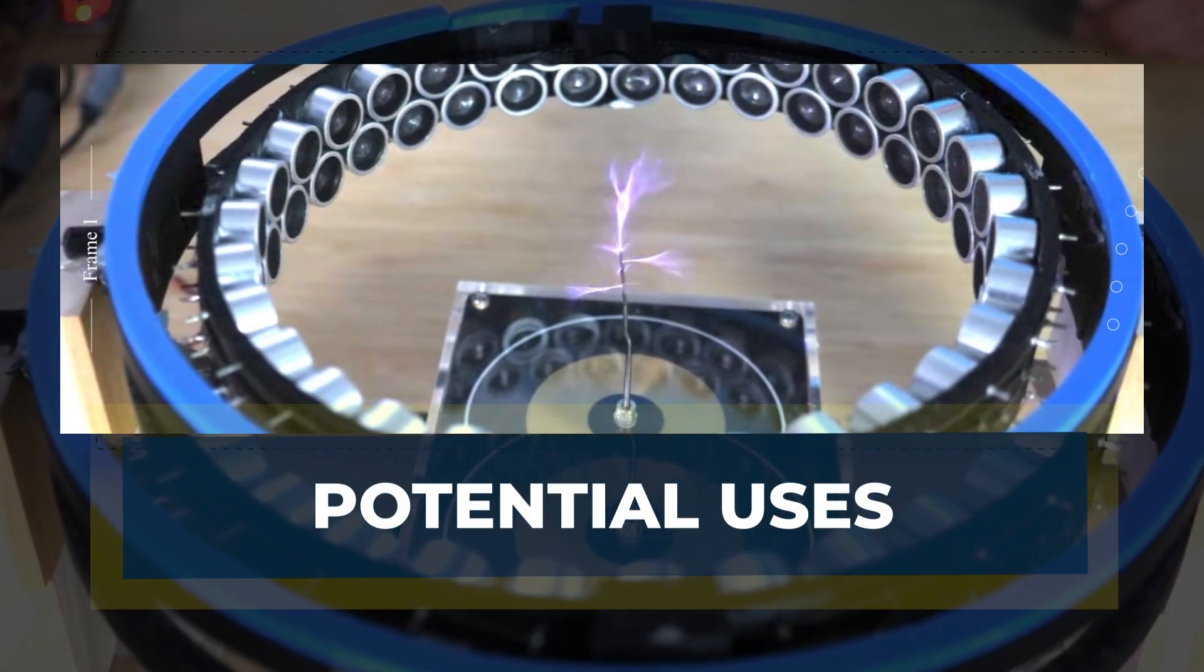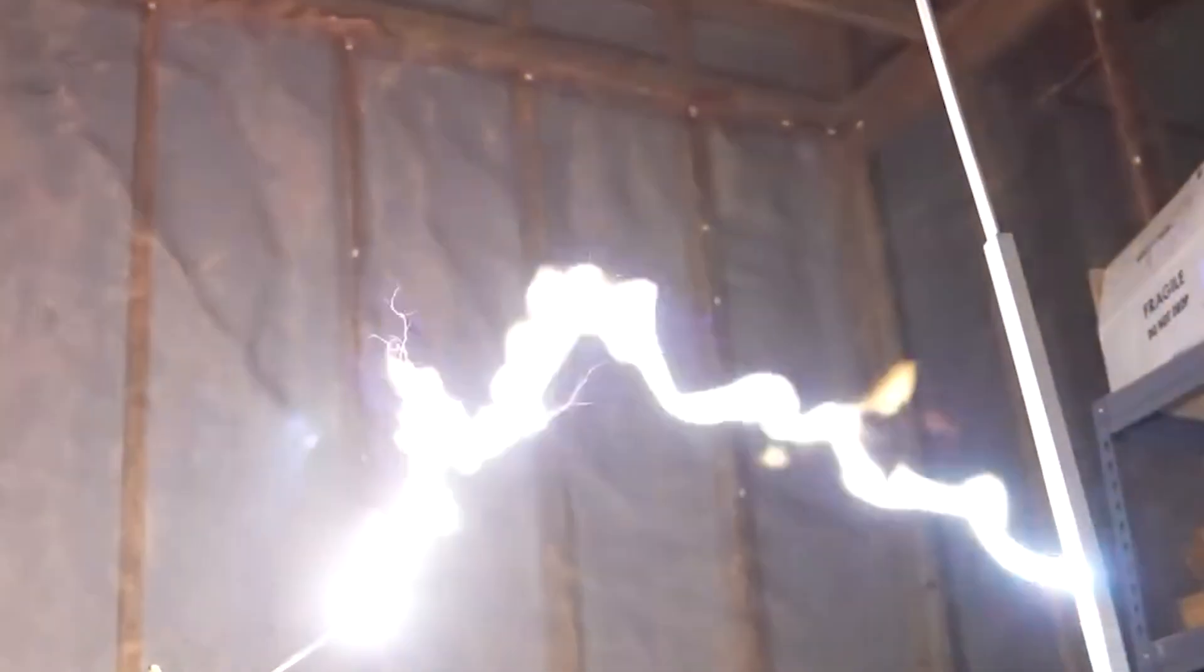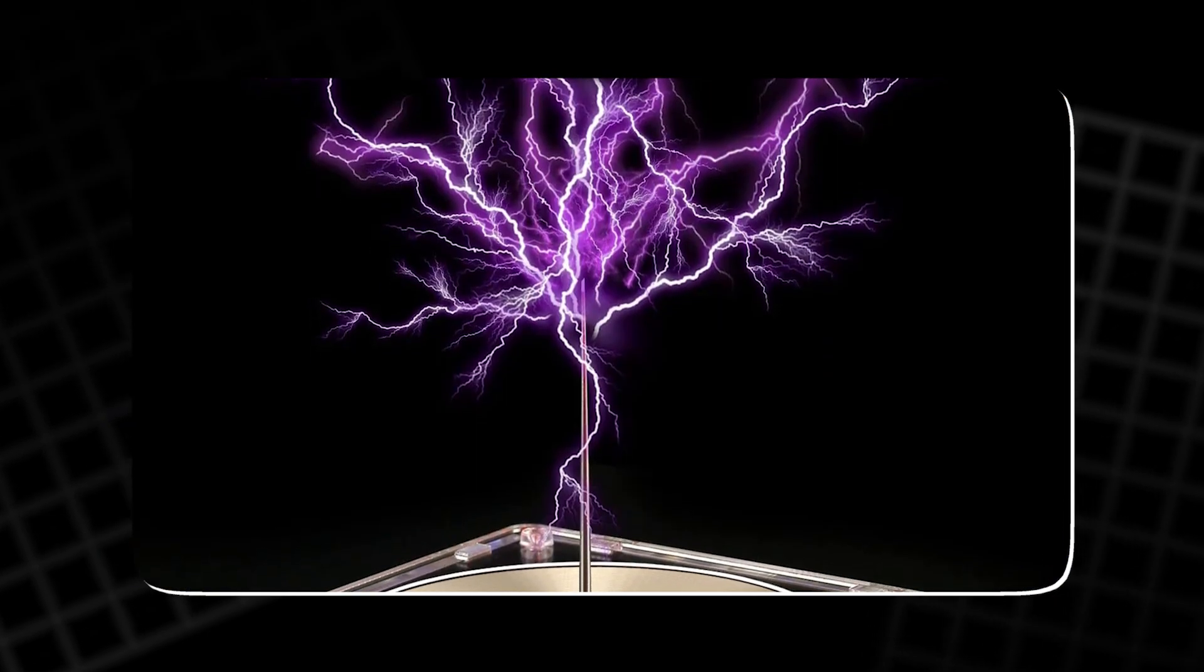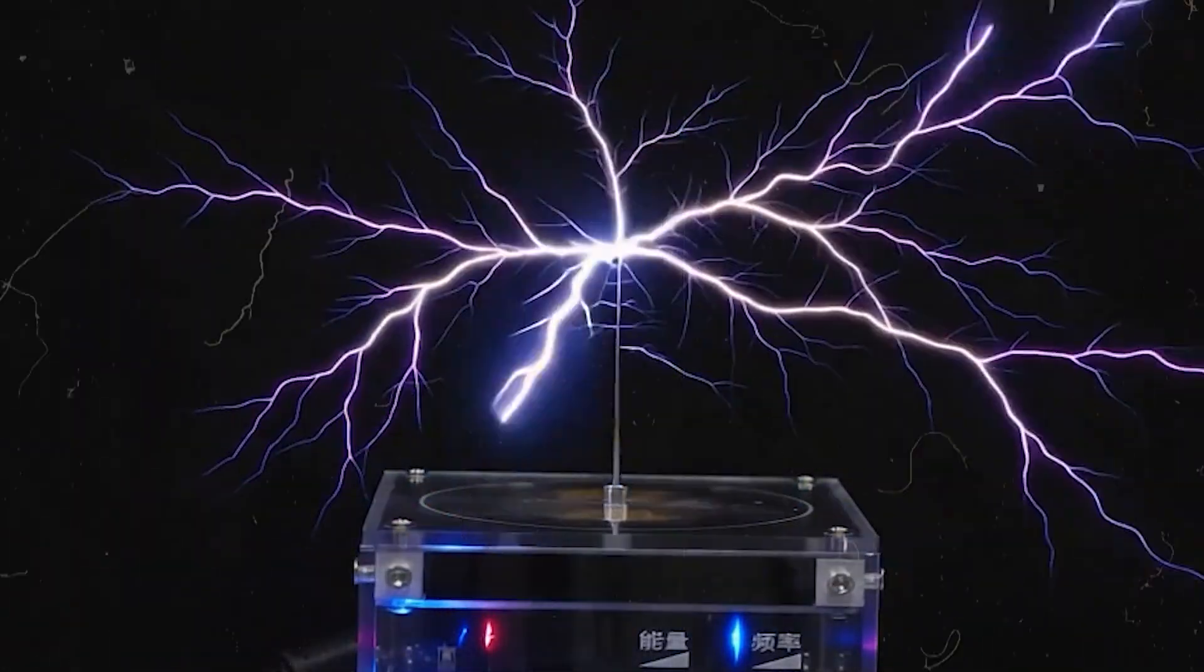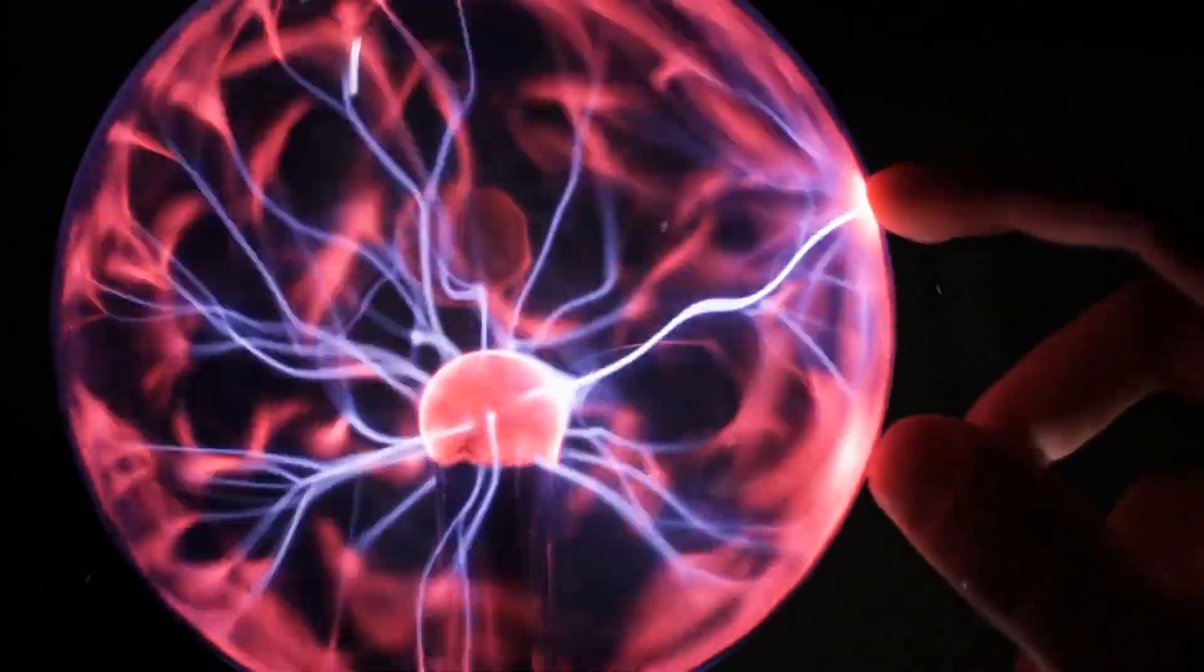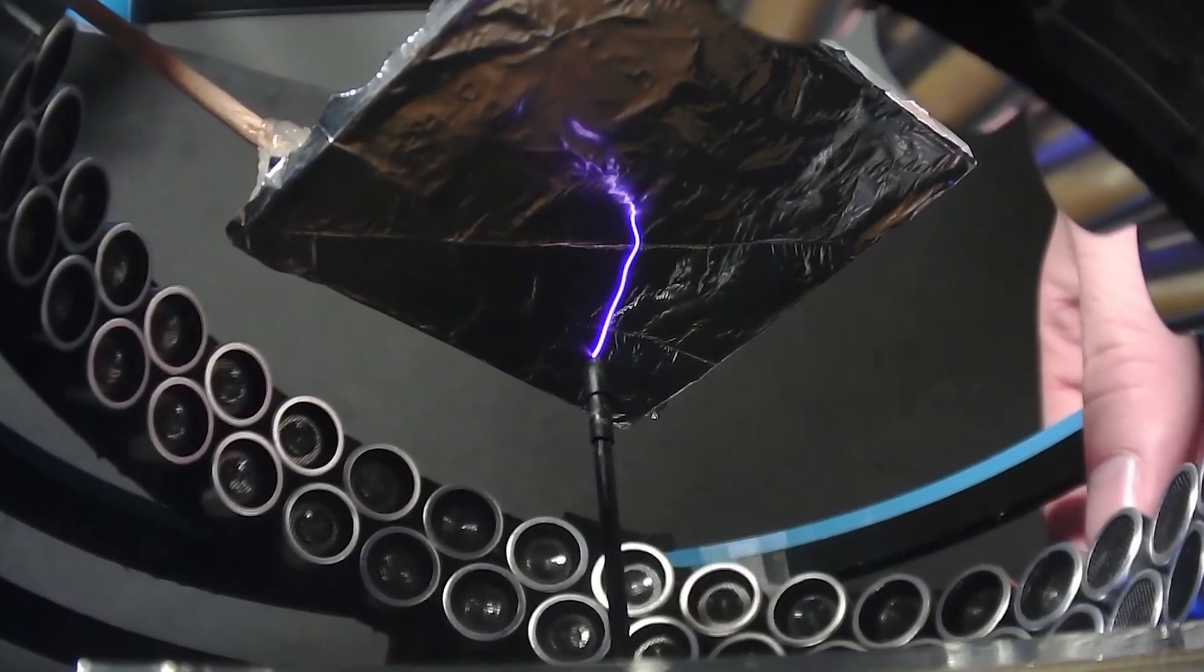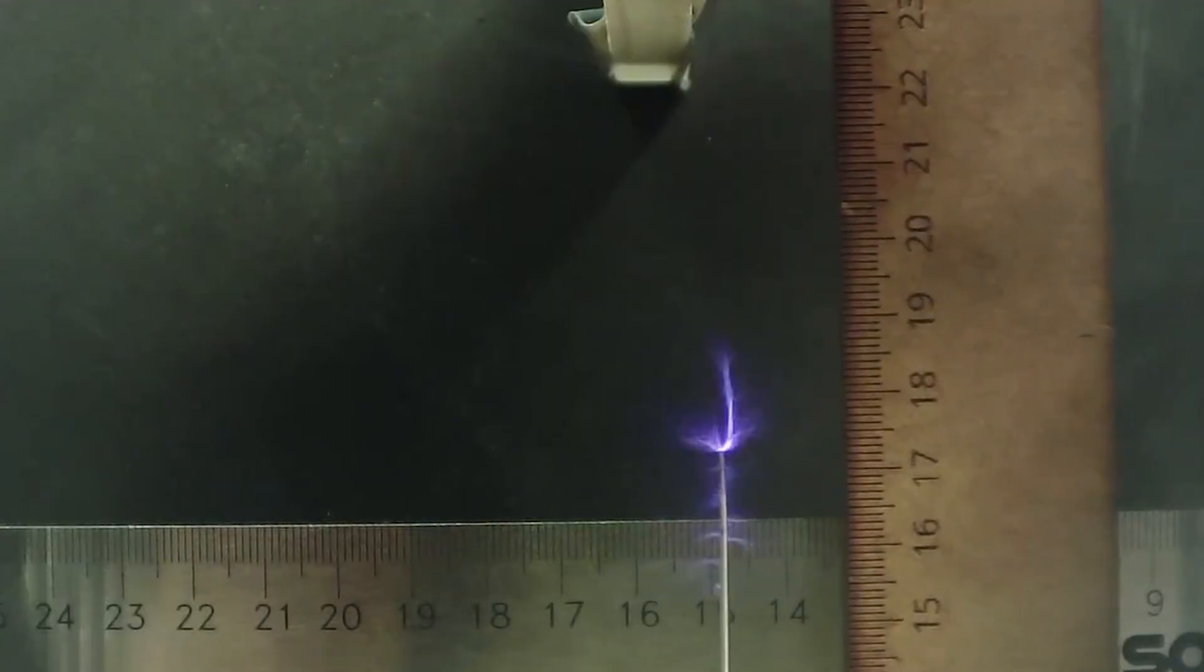Potential uses: Guided plasma is more than a laboratory curiosity. It could redefine how we manipulate high voltage electricity. In power systems, it could allow for non-contact electrical connections that form and disappear on command. In manufacturing, it might focus on plasma welding or cutting to precise points without mechanical movement. The ability to steer plasma could also improve environmental or medical technologies. For instance, controlled plasma can sterilize surfaces, treat pollutants, or trigger specific chemical reactions in mid-air.